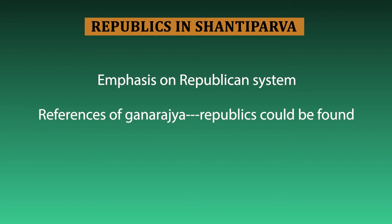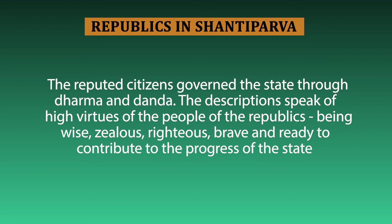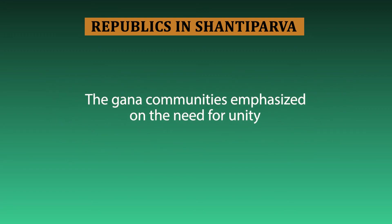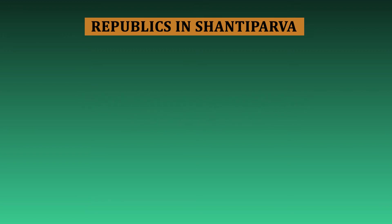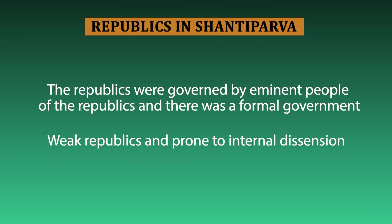Republics were found in cities and urban areas, and followed principles of dharma. The reputed citizens were entrusted with the task of ruling the republics with dharma and danda. In these republics, people were found to be wise, zealous and righteous, and ready to contribute to the progress of the state. These Gana communities emphasized the importance of unity. However, though the republics were governed by eminent citizens, in course of time they became weak and were prone to disunity and internal dissension.